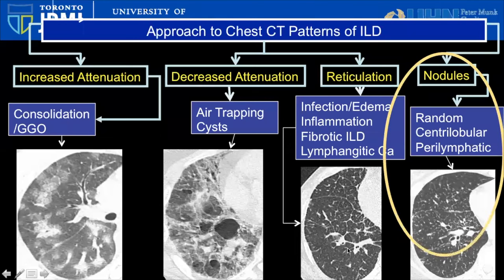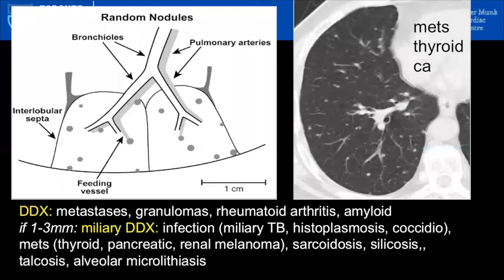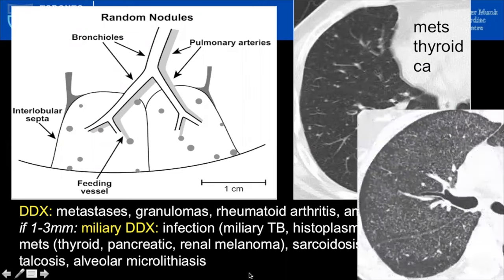Lastly, nodules — we'll focus on small nodules, not cavitary or large ones. Randomly distributed nodules don't have a specific pattern; they're everywhere, and metastatic disease is a very common underlying cause. When random nodules are very small, one to three millimeters, we use the term miliary. Here's an example of miliary TB — notice a couple of nodules along the fissures, but the predominant pattern is a randomly distributed micronodular miliary pattern.